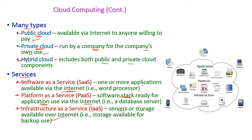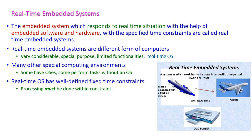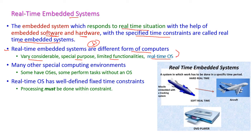The last computing type is real-time embedded systems. A real-time embedded system responds to real-time situations using embedded software and hardware within specified time constraints. Real-time embedded systems differ from general computers in that they have special-purpose, limited functionalities, and a real-time OS is installed on them.